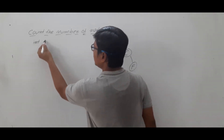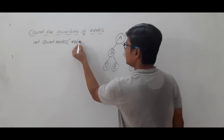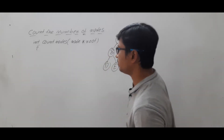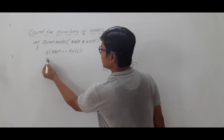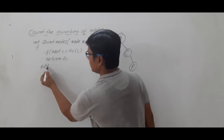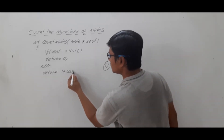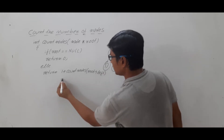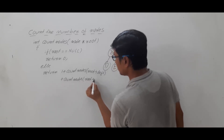Now let me write the pseudo code. I will write: int countNodes(node* root). Because I am writing a recursive call, I will write it in a simple way. If root == null, then return 0. This is the base condition for the program. Else, return 1 plus countNodes(root->left) plus countNodes(root->right). These are the recursive calls we are doing.